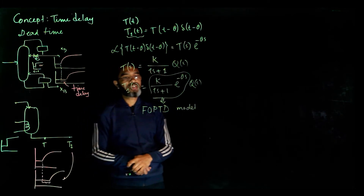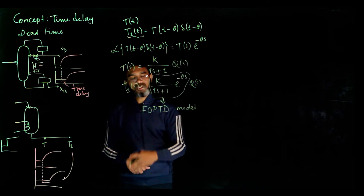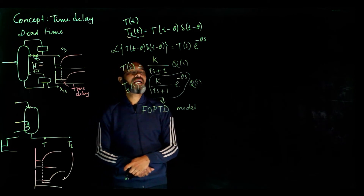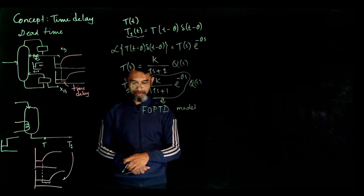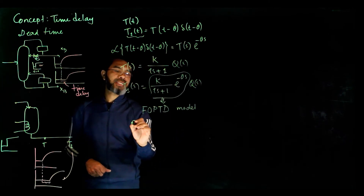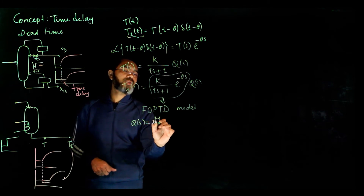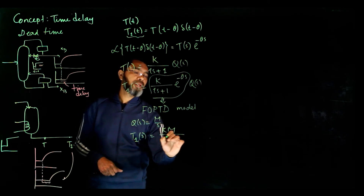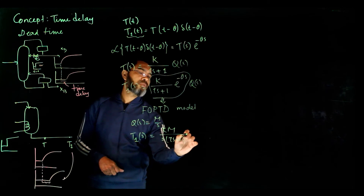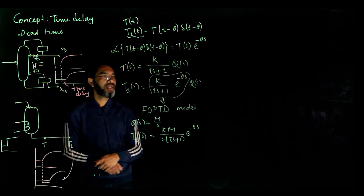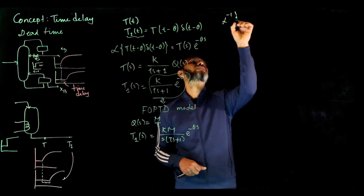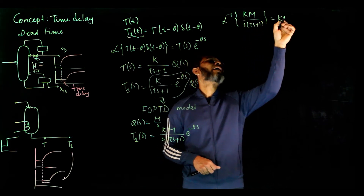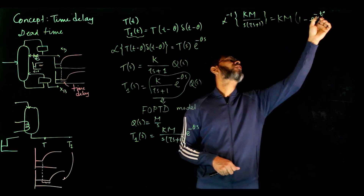We will always refer to this as the First Order Plus Time Delay model. Now, how to take the inverse Laplace of this time delay form. Suppose Q(s) = M/s (a step input), so T1(s) = K·M / [s(τs + 1)] times e^(−θs). We know that the inverse Laplace of K·M / [s(τs + 1)] is K·M times (1 − e^(−t/τ)).